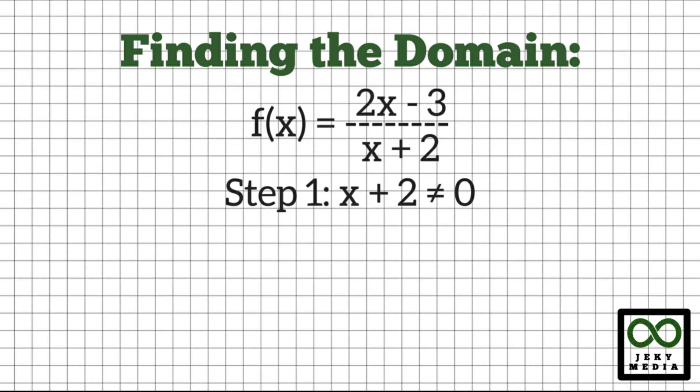Let's transpose 2 to the right side of the inequality. This becomes x is not equal to negative 2. This means that the domain of the rational function are all real numbers except negative 2.